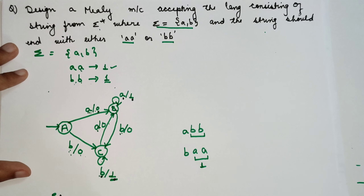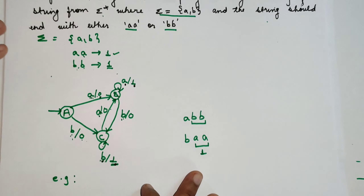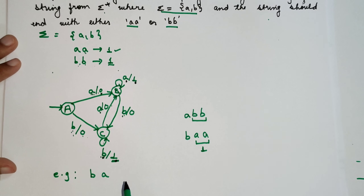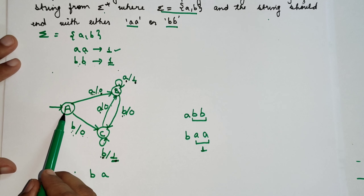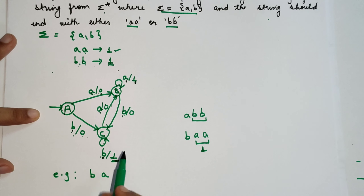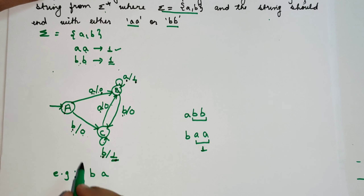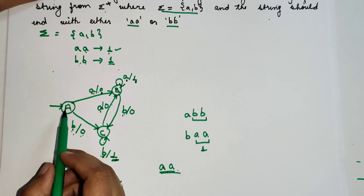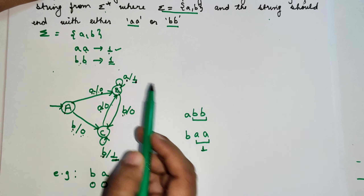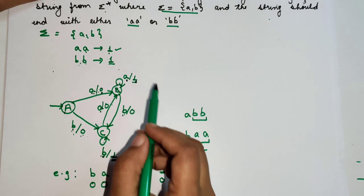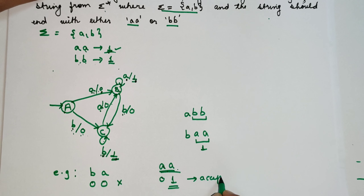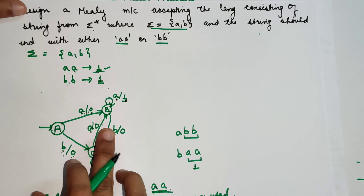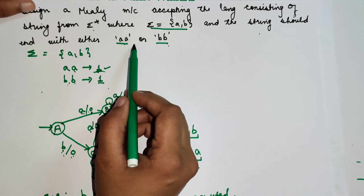Let's take a simple string and check whether it is accepted or not. For example, take BA. We start from the initial state, and output we get is 0. Then it goes to the next state and output produces 0. So we can say that BA is not going to be accepted. Now let's check where it is going to be accepted — whenever double A is encountered it should accept. So for input AA: first A produces output 0, and the second A produces output 1. Getting output 1 means this string is going to be accepted. So this is the Mealy machine and this is how we construct it for either double A or double B.